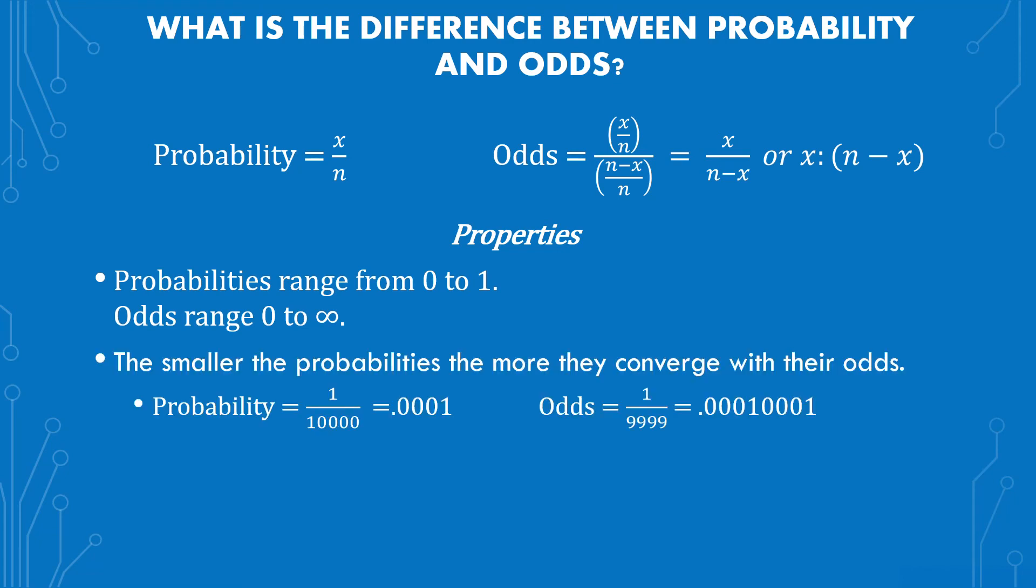The second is that the smaller the probabilities, the more they converge with their odds. So what's that mean? When it comes to the probability, say you have 1 over 10,000, you get 0.0001. When it comes to the odds of that, you have 1 over 9,999, which gives you 0.00010001. So it's slightly bigger than the probability, but the probabilities, as they go smaller, they'll look more like their odds.